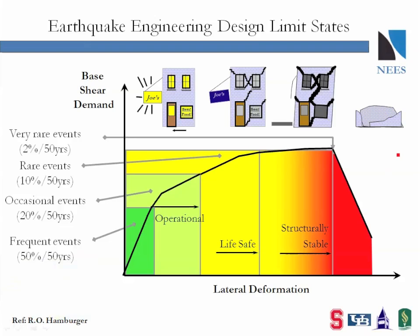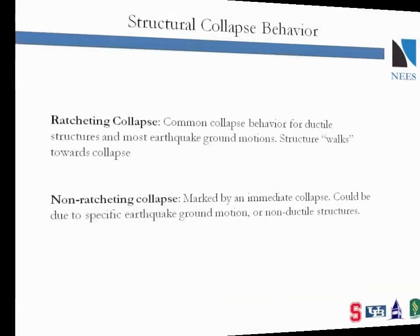If we consider the earthquake engineering design limit states typically associated with performance-based earthquake engineering, we see that the structural collapse limit state is the most severe. Operational, life safety, and structural stability are also shown on the slide and are commonly used to describe the less severe limit states preceding collapse.